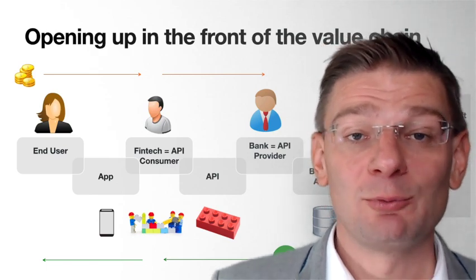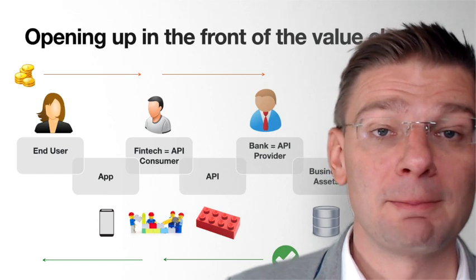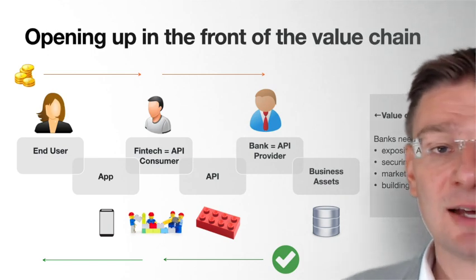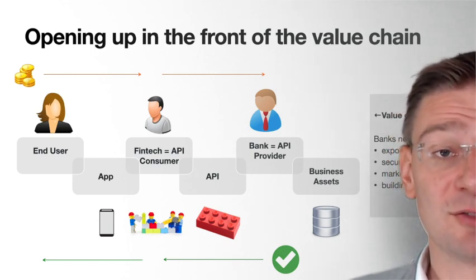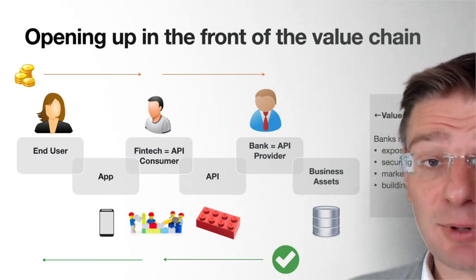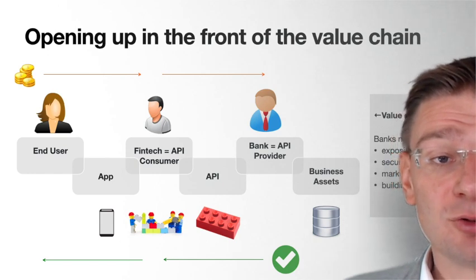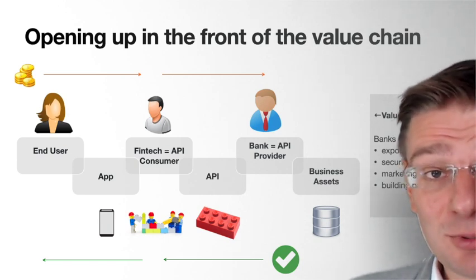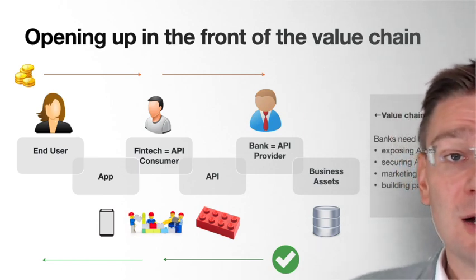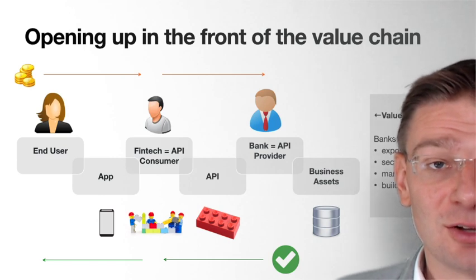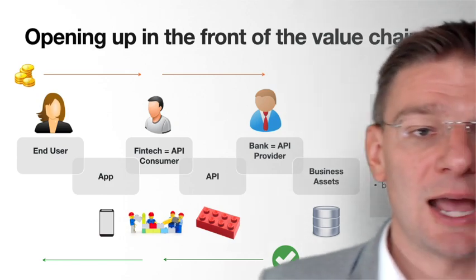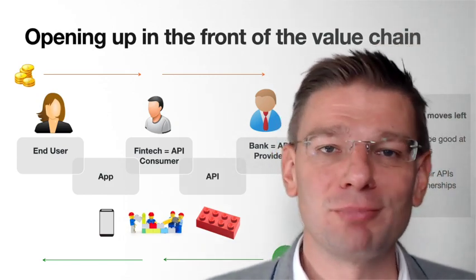What's important when we open up the value chain in the front of the bank is that the value chain gets longer and moves left. Banks now need to become better at new things: they need to be good at exposing APIs, securing those APIs, and marketing the APIs to those new players — the new API consumers, the FinTechs. They also need to be able to build new partnerships at scale. It's not just one partnership like banks used to do in the past — this needs to scale. You need to create partnerships at scale to open up the value chain in the front and be successful with it.